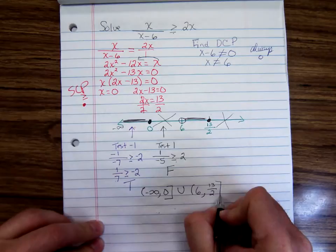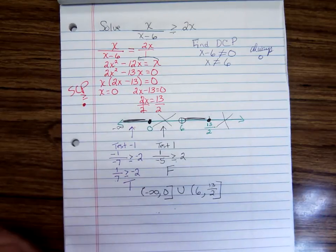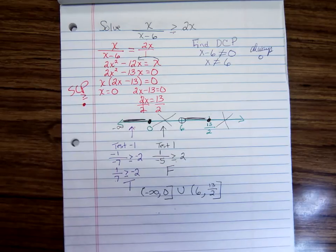Notice we're using brackets for the closed circle, parenthesis for the open circle. Always put parenthesis by the infinity symbols. And so this is it for solving this little nonlinear inequality.